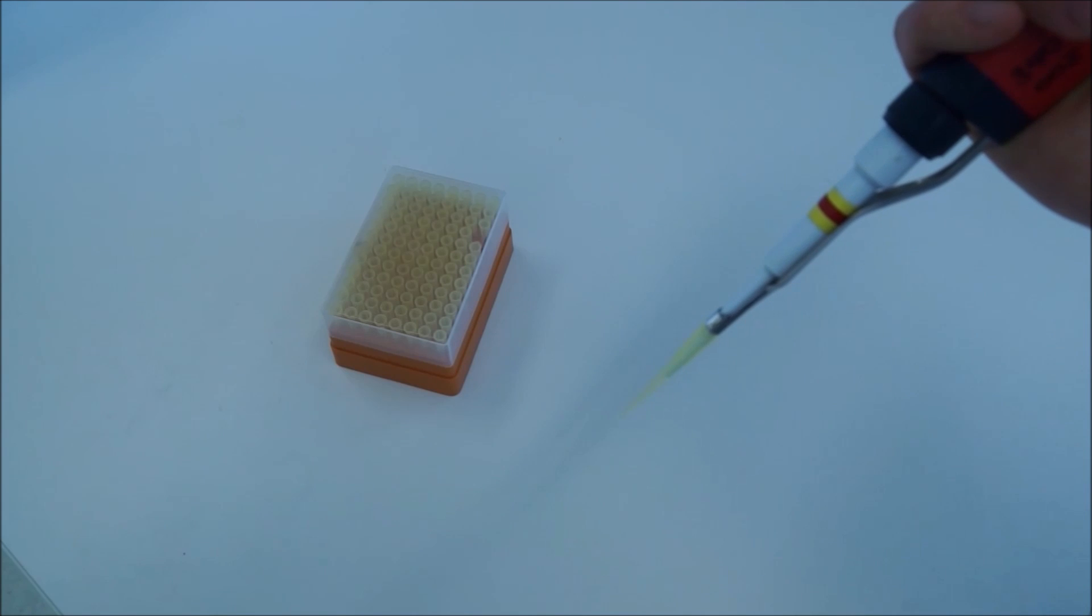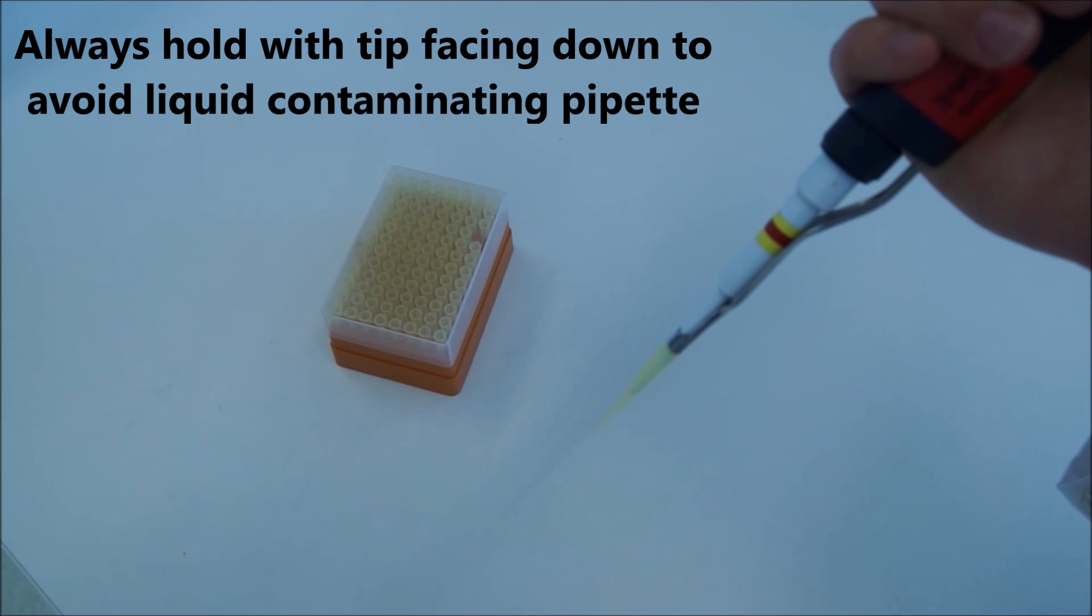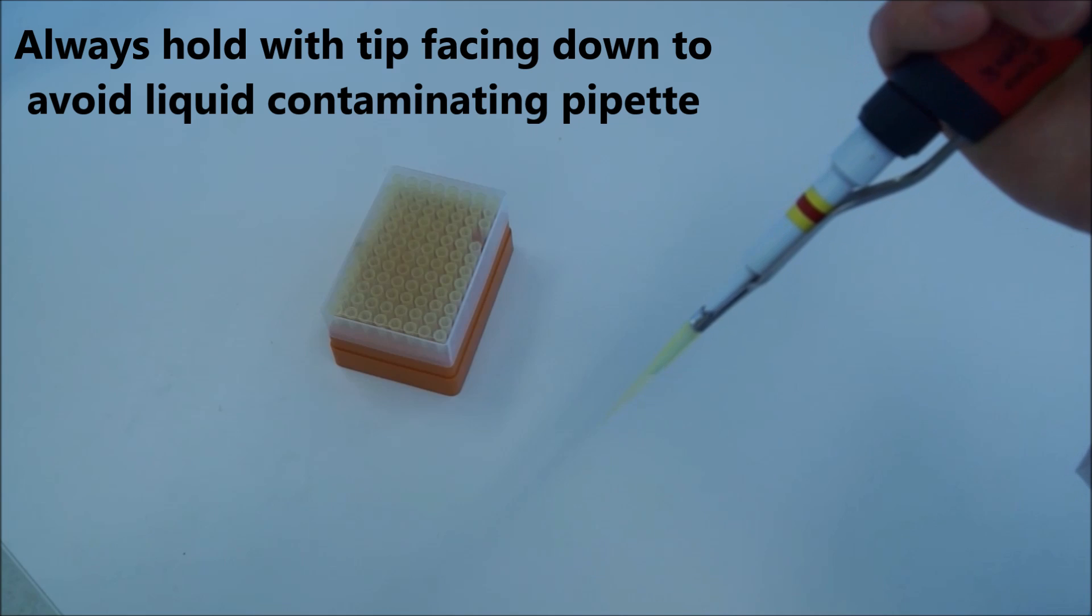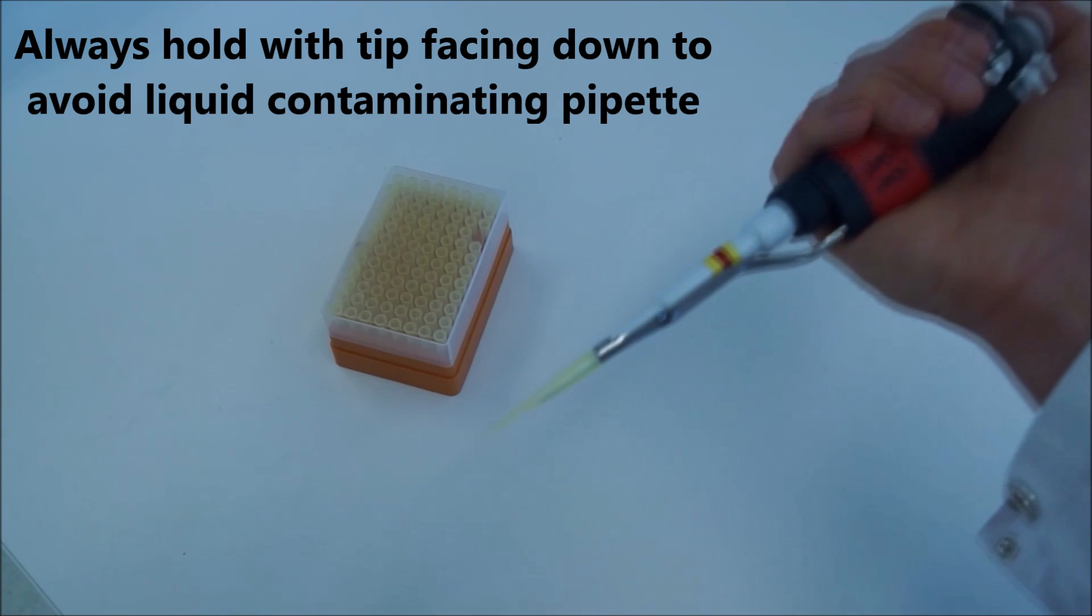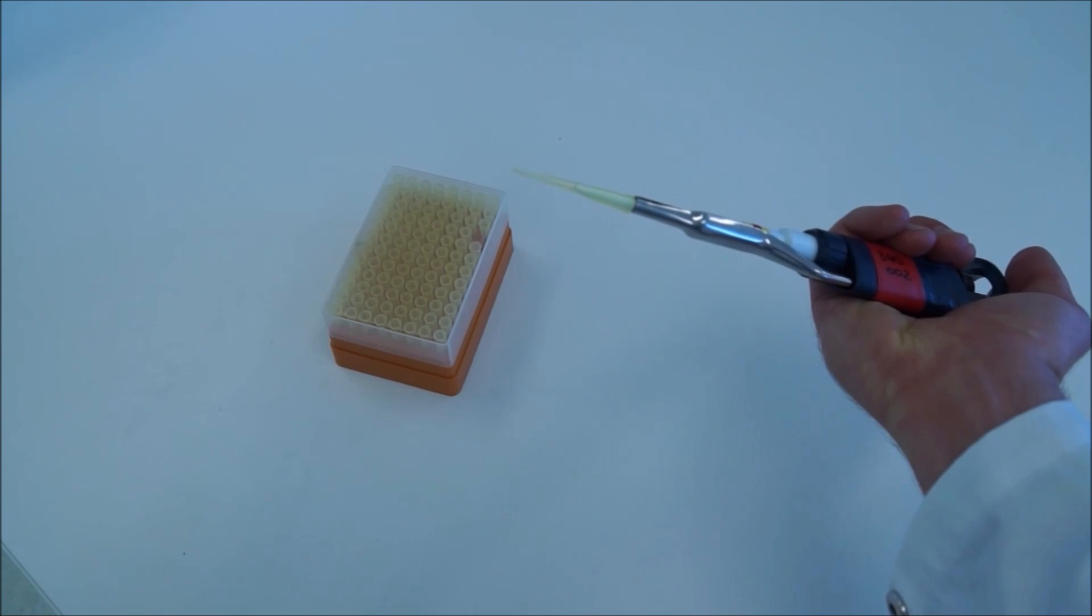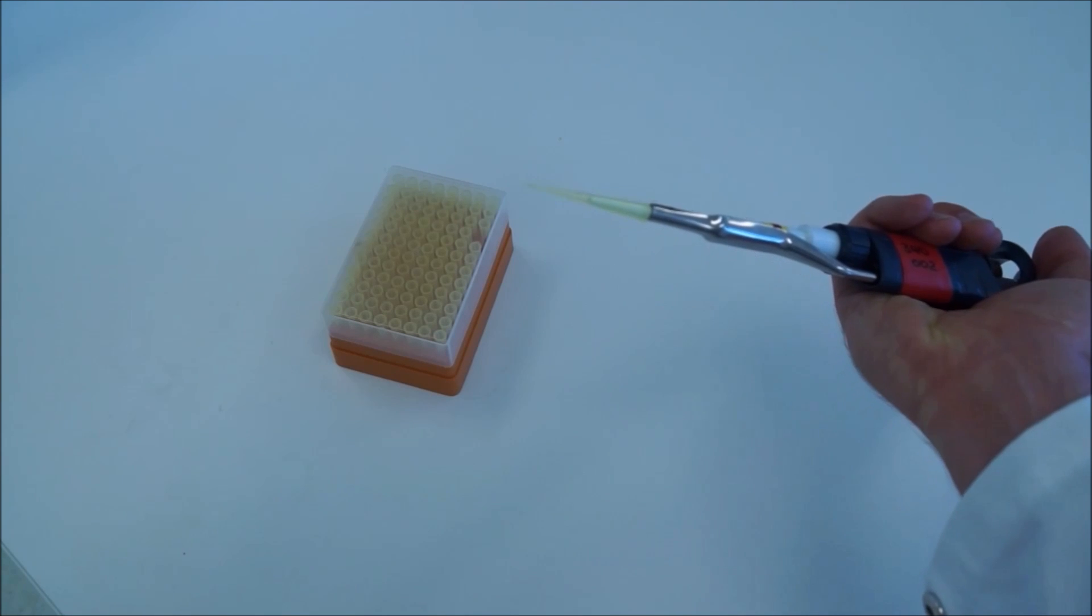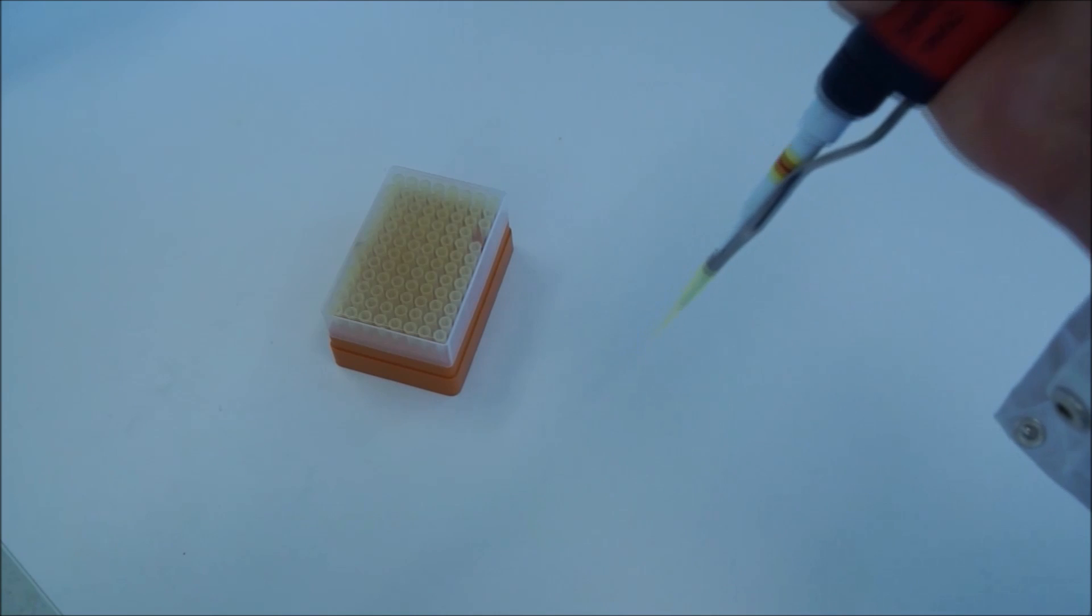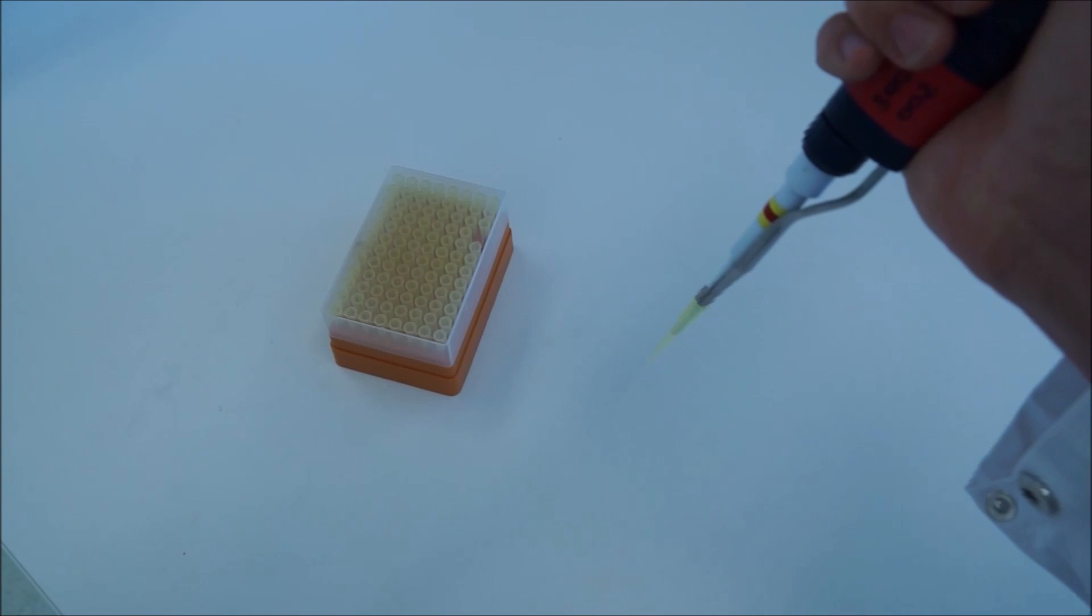When you've got the pipette tip on, try to always keep it facing downwards because if you have liquid in the pipette tip and you turn it up the other way, well, liquids obey the laws of gravity so they'll go down into the actual pipette and contaminate it. So always try and keep the pipette facing downwards.